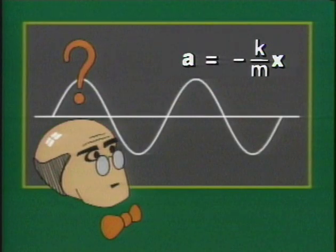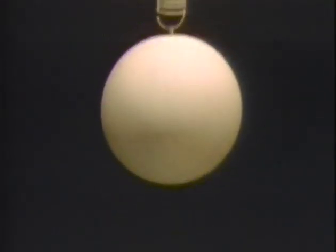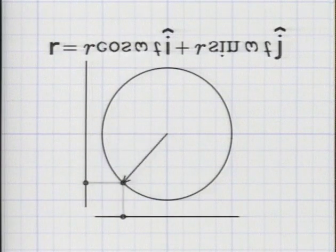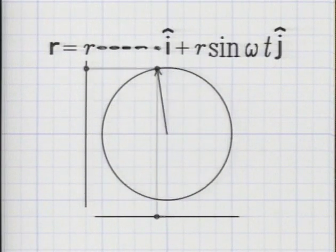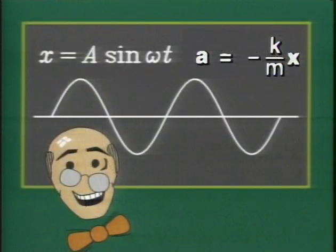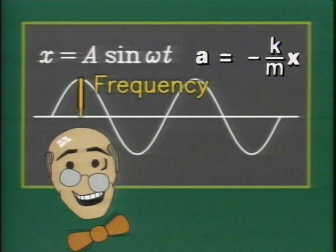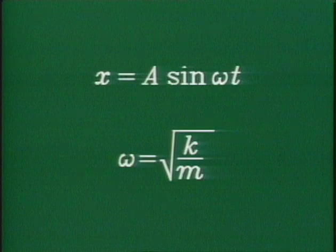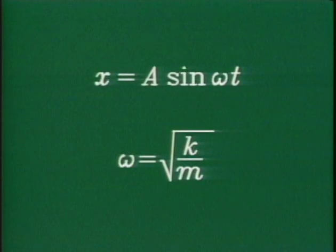A long time ago, someone guessed that the solution may be a sine function. It was an educated guess, because the motion of a mass oscillating on a spring resembles the motion of the shadow of a particle moving in uniform circular motion. So the idea of guessing a sine function seemed quite natural. In this case, a sine function with amplitude A and an angular frequency omega. For the mass on a spring, the angular frequency is equal to the square root of k over m.